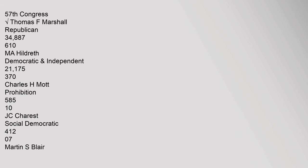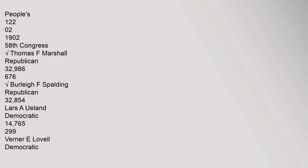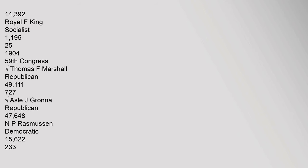1900 (57th Congress) — Thomas F. Marshall, Republican: 34,887 (61%). 1902 (58th Congress) — Thomas F. Marshall, Republican: 32,986 (67.6%); Burley F. Spaulding, Republican: 32,854; Lars A. Ulland, Democratic: 14,765 (29.9%); Werner E. Lovell, Democratic: 14,392; Royal F. King, Socialist: 1,195.